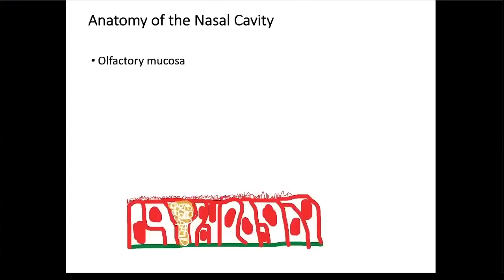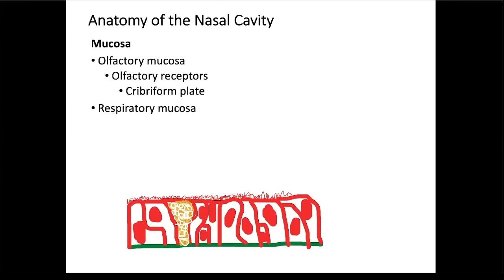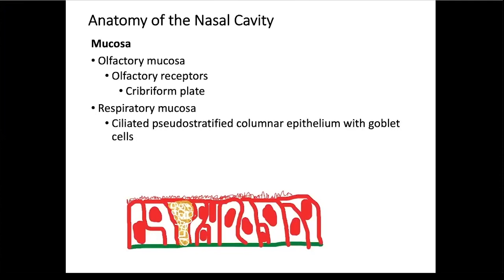The mucosa in the nasal cavity is of two types. The olfactory mucosa will have receptors for smell — these are your olfactory receptors. The olfactory nerves go through the olfactory foramina, which are the holes in the cribriform plate of the ethmoid bone, to the olfactory bulbs. The rest of the mucosa is called respiratory mucosa, and it consists of ciliated pseudostratified columnar epithelium with goblet cells.